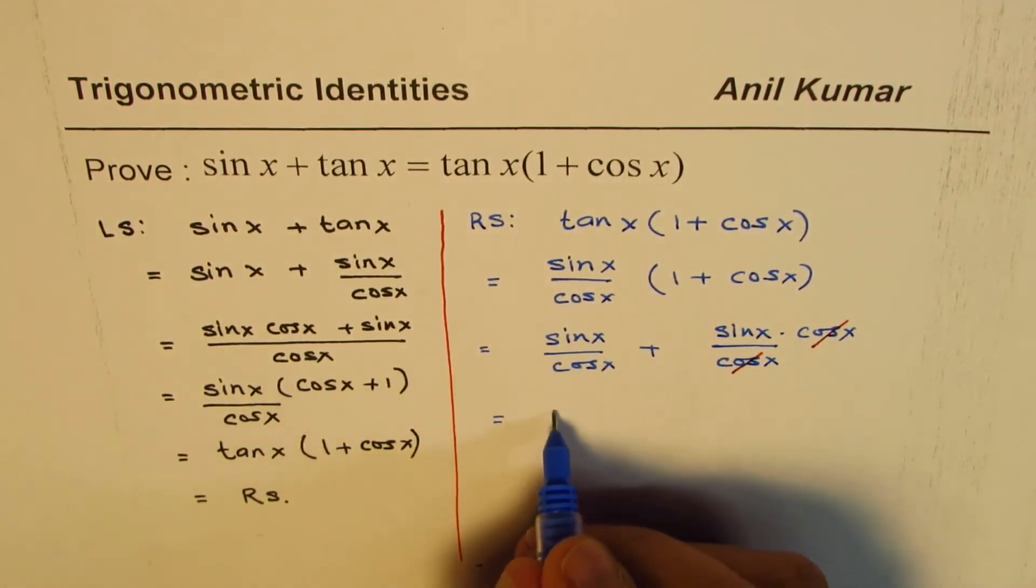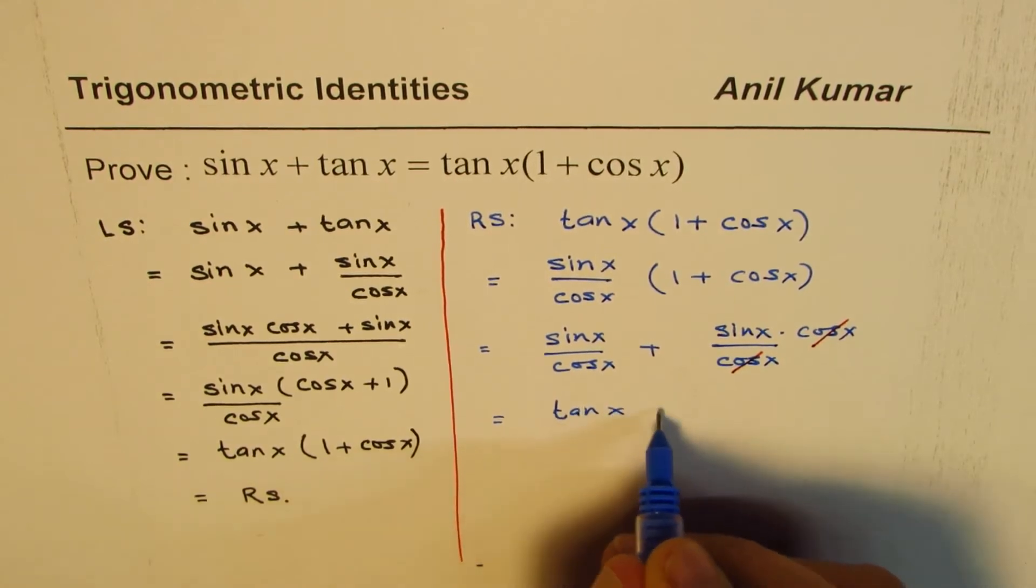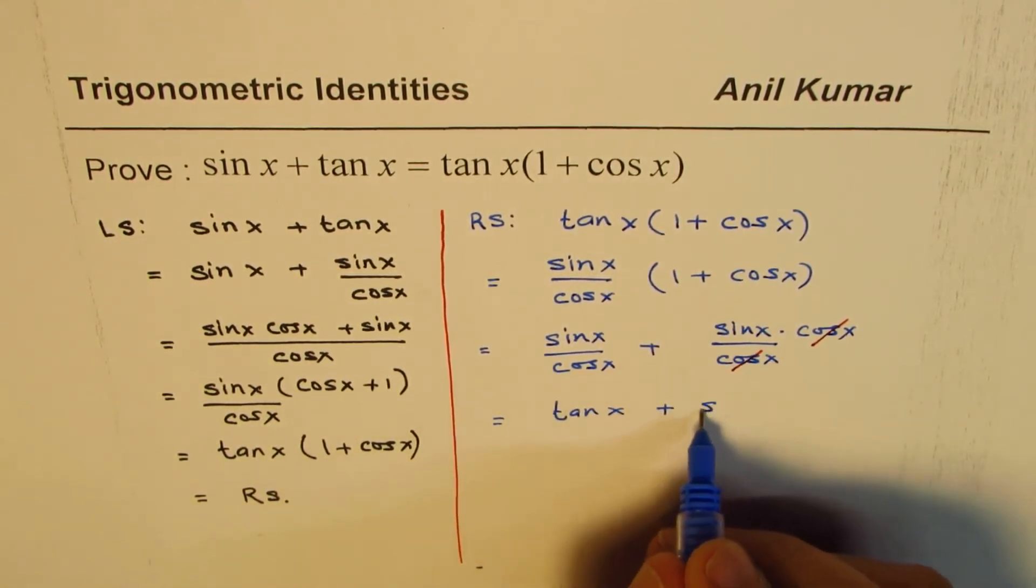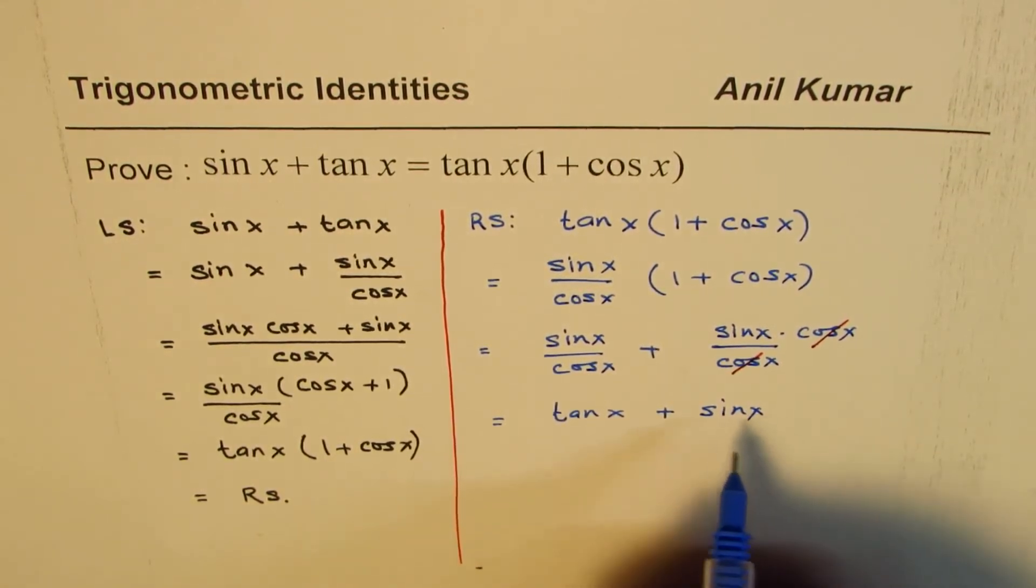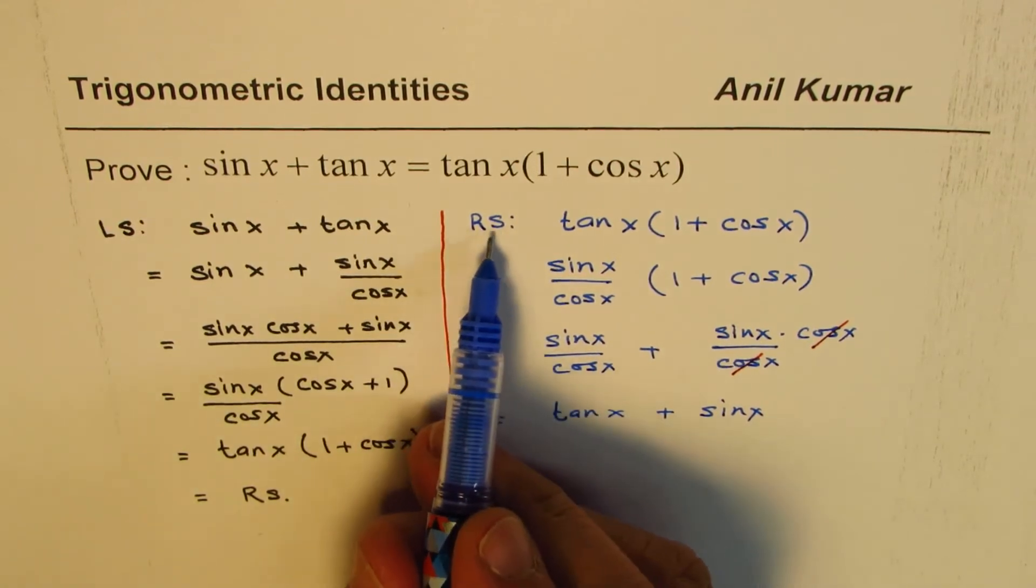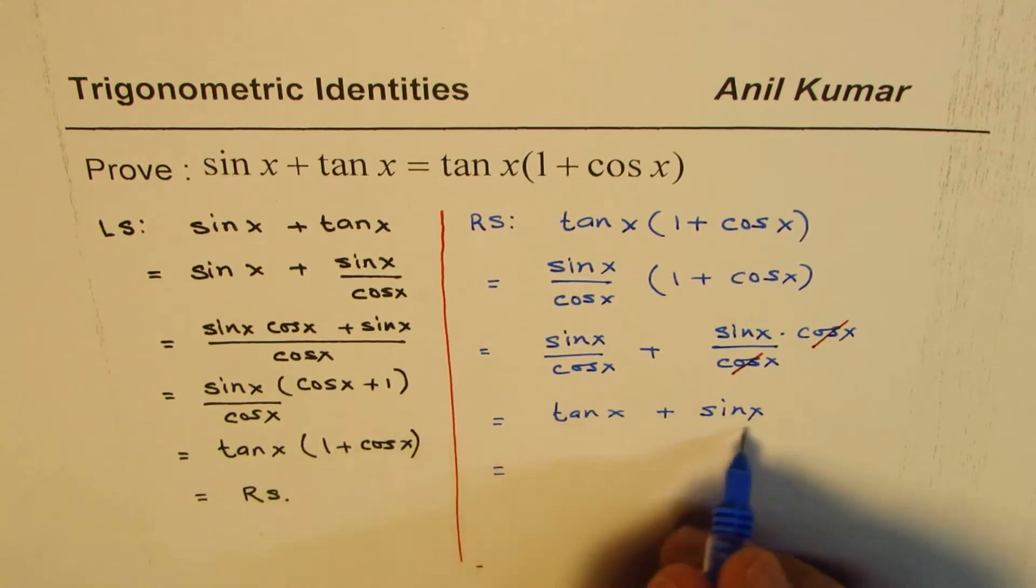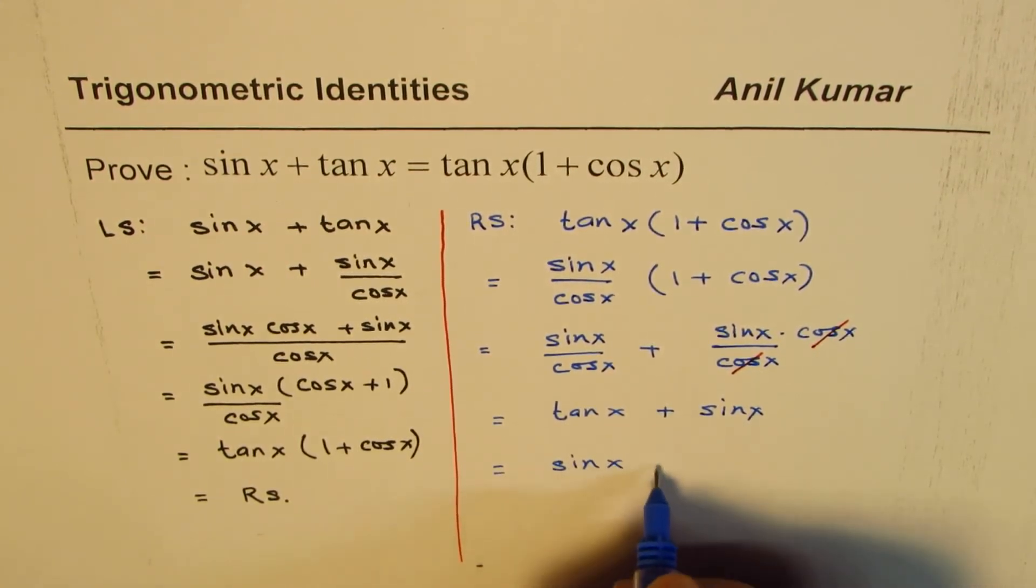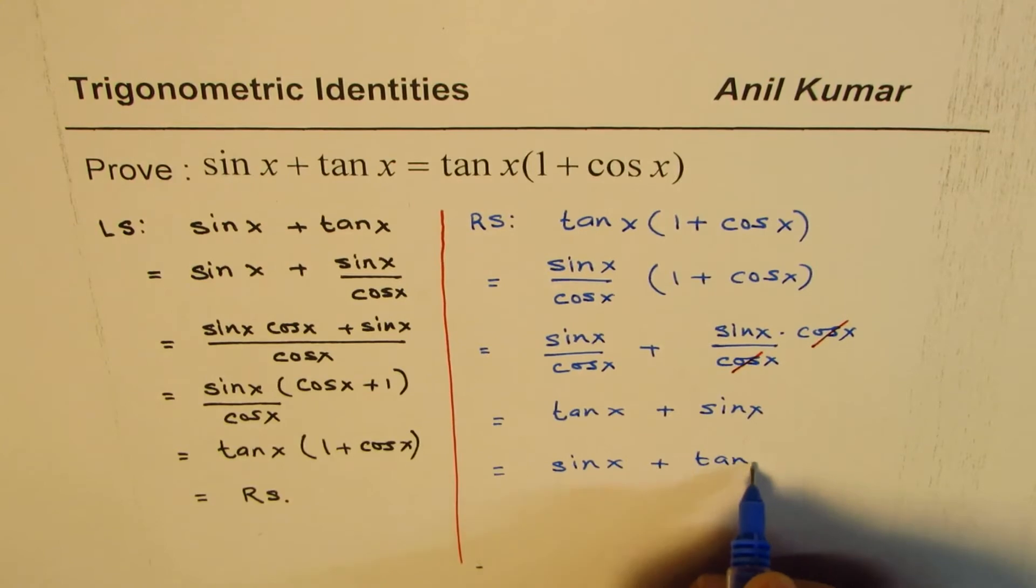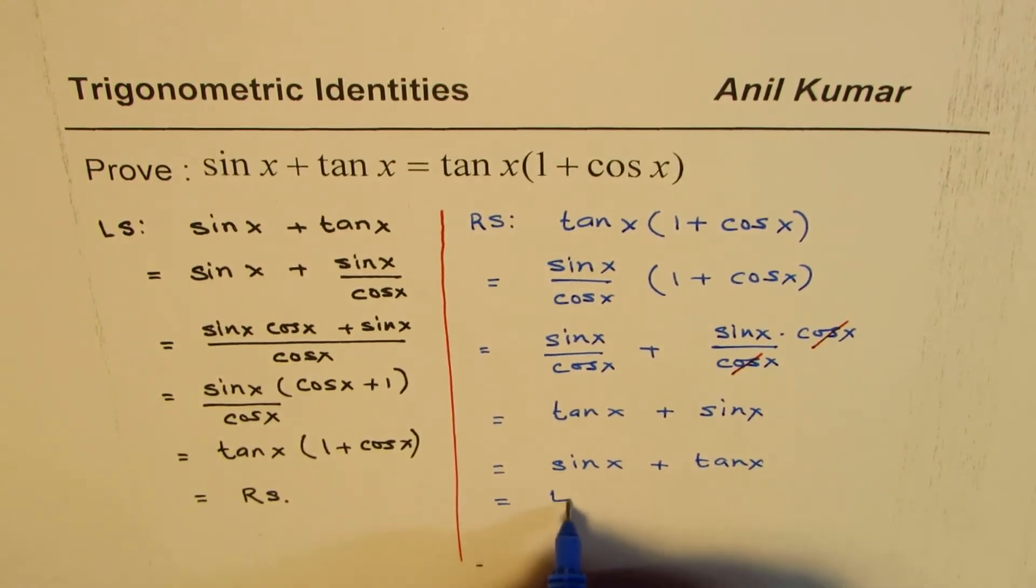We have sin x over cos x which could be written as tan x plus sin x. We want this right side to be same as left side which is indeed commutative property, that is we could write this as sin x plus tan x. And that is the left side.